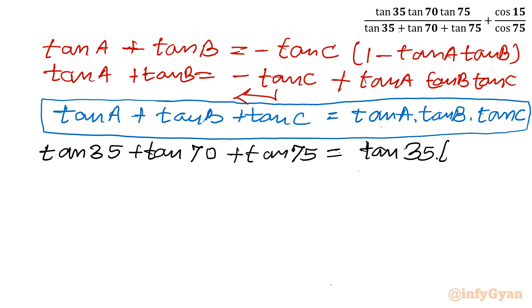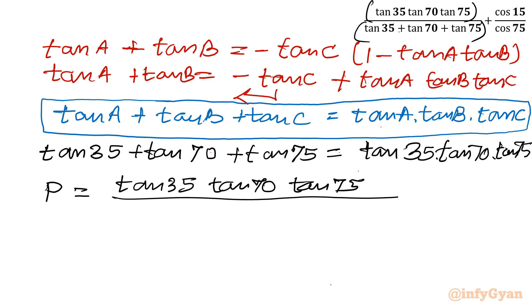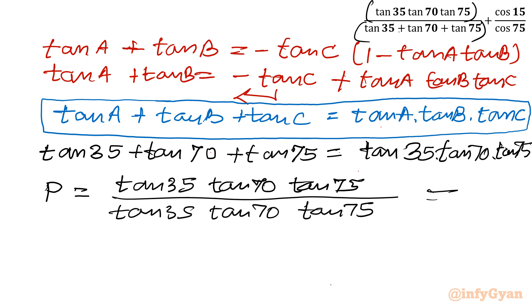Looking at expression P, the numerator tan 35 times tan 70 times tan 75 cancels with the denominator, which equals the same product by the identity we just derived. Therefore P equals 1.